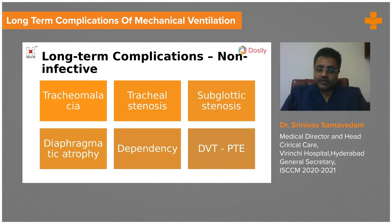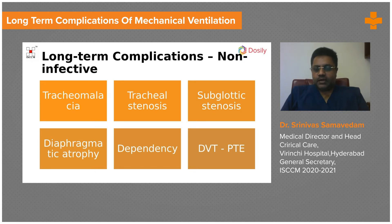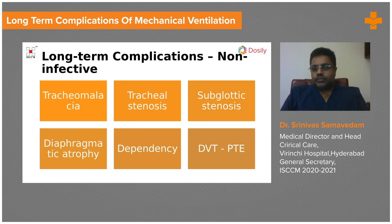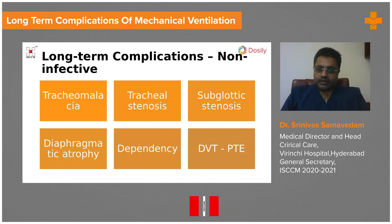Another problem in long-term ventilated patients is deep venous thrombosis, because of sluggish venous return and stasis in the peripheries. Mechanical ventilation is a risk factor for DVT and subsequent pulmonary thromboembolism. It is recommended that patients who are hypoxemic or hypotensive should be on dual-mode thromboprophylaxis — a mechanical device as well as pharmacoprophylaxis with low molecular weight heparin, unfractionated heparin, or fondaparinux.